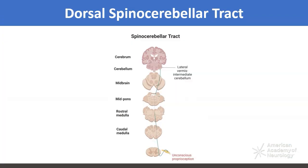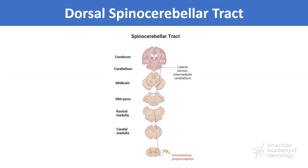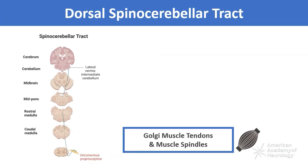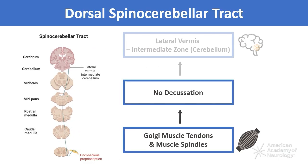The dorsal spinocerebellar tract, also known as the posterior spinocerebellar tract, is a lateral column tract that has no decussation, meaning it does not cross from one side to the other. It begins at two main types of proprioceptors — Golgi muscle tendons and muscle spindles — and will end in the lateral vermis intermediate zone in the cerebellum. The primary function of this tract is unconscious proprioception.